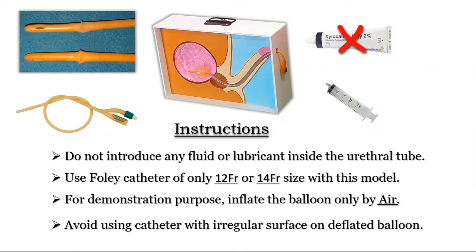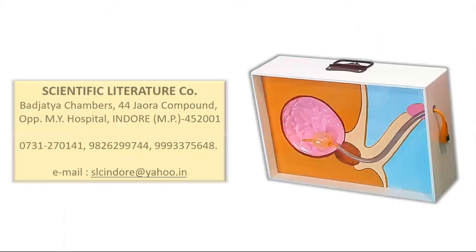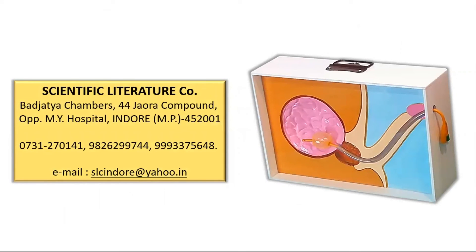After repeated use, the catheter may develop some wrinkling on its balloon, and it may be difficult to pass such a catheter through the curvature of the tube — in such a case, please start using a new catheter. At present, that is in October 2022, this model is available at only one agency, which is Scientific Literature Company in Indore. You can communicate with the dealer through mail or phone call.